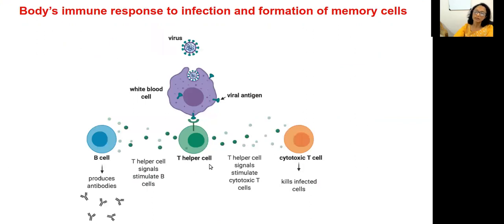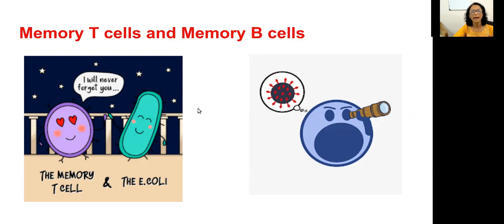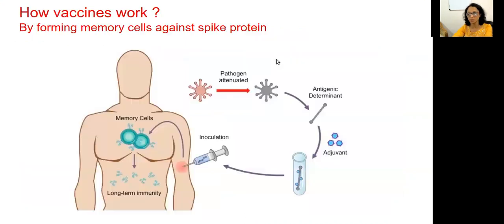The most important thing that happens in this immune response is that some T cells and B cells are converted into memory cells — memory T cells and memory B cells. These memory cells remember the structure of that spike antigen. Whenever there is further infection or reinfection, these memory cells get activated and form antibodies much faster than viral replication sets in, destroying the virus and preventing reinfection. These memory cells may stay in the body lifelong in many infections, though in COVID we still don't know how long they will stay. Formation of memory cells is the basis for vaccine formation.